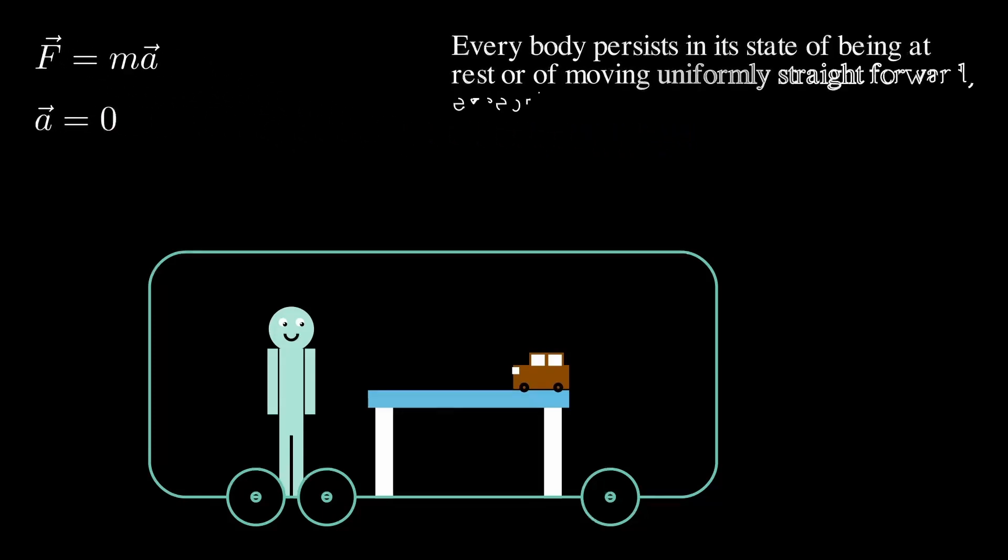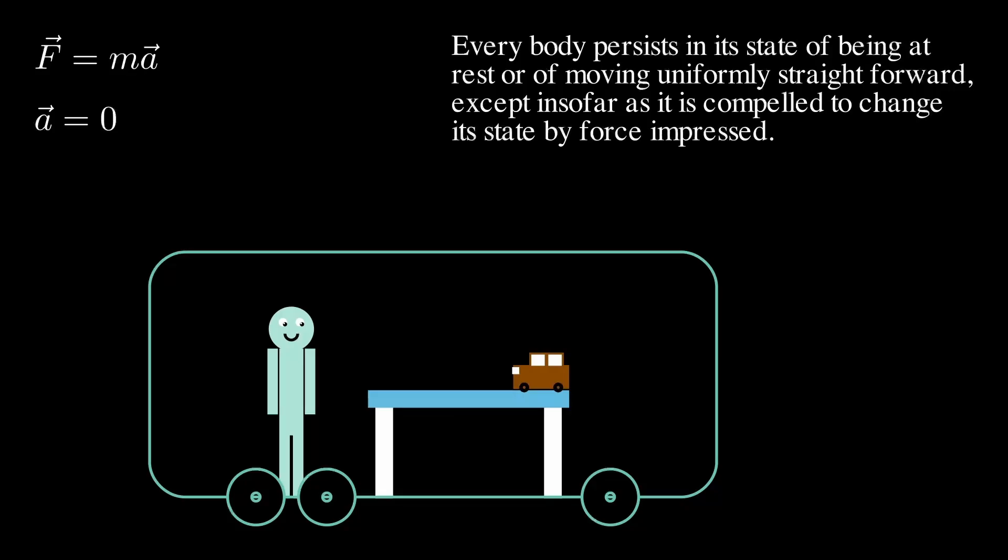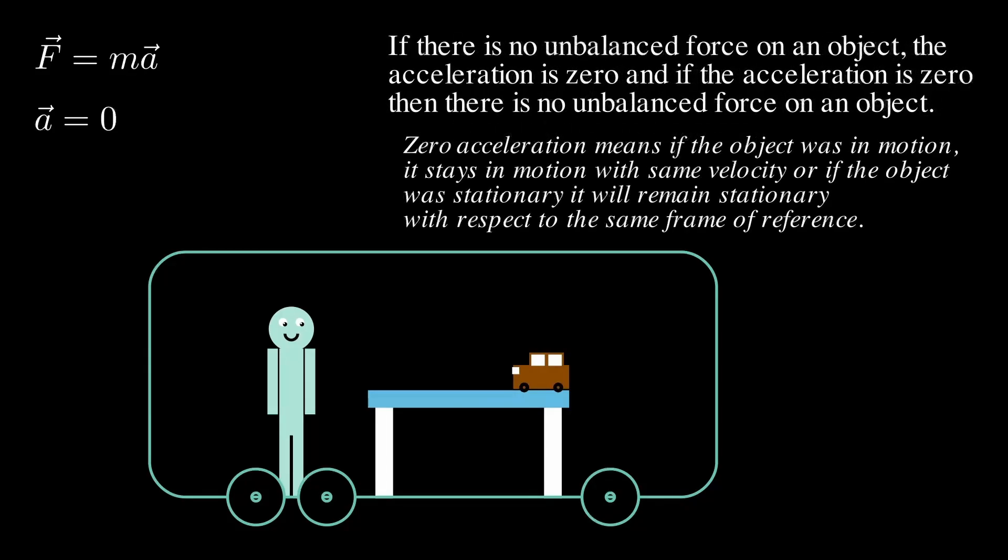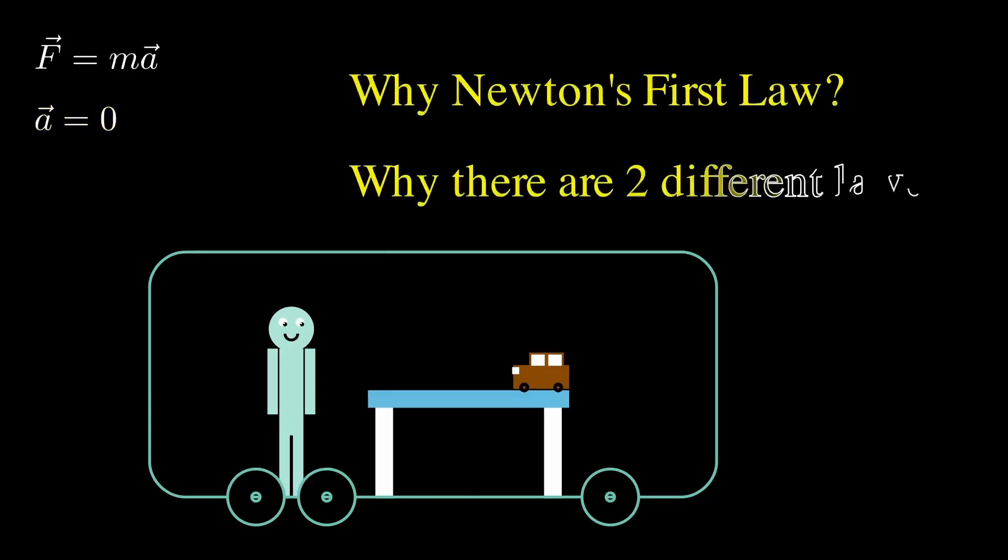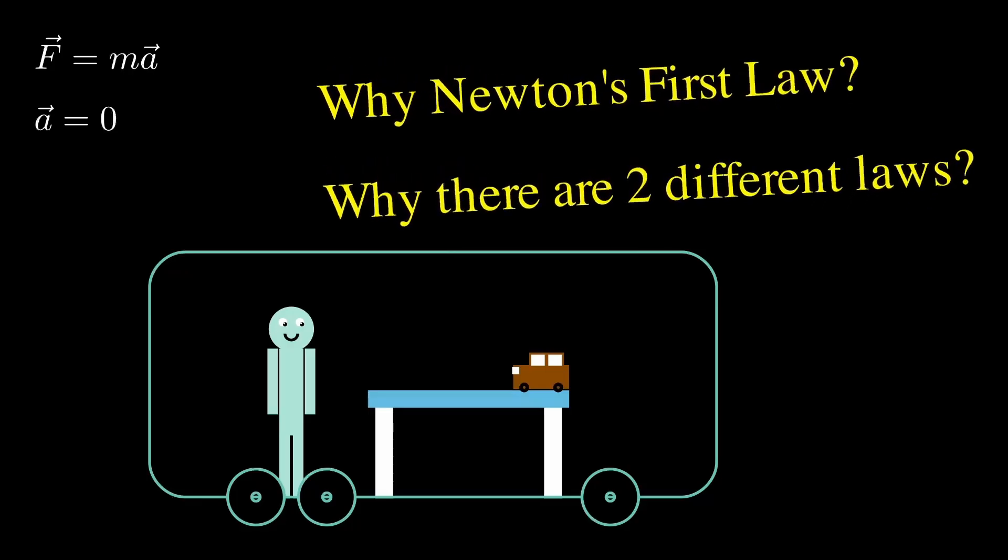However, you remember reading about Newton's first law and you realize that both of these are actually the same thing. That got you thinking that F equals ma is Newton's second law. And in that equation, if you put force equals zero, you get acceleration equals zero. So why is there Newton's first law? Why are there two different laws and not one?